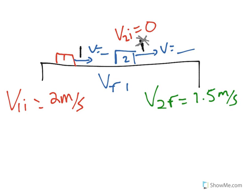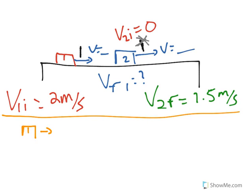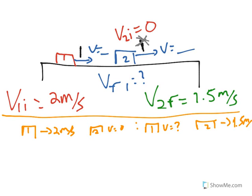We're looking for the final velocity of the first glider. I'll show you this method where we draw a picture of a before and after scenario. Before: glider 1 moving at 2 meters per second, glider 2 stationary. After the collision: glider 1 moving with some unknown velocity, and glider 2 moving at 1.5 meters per second. The key principle is that momentum initially equals momentum finally — this is the total momentum of the system, including both objects.